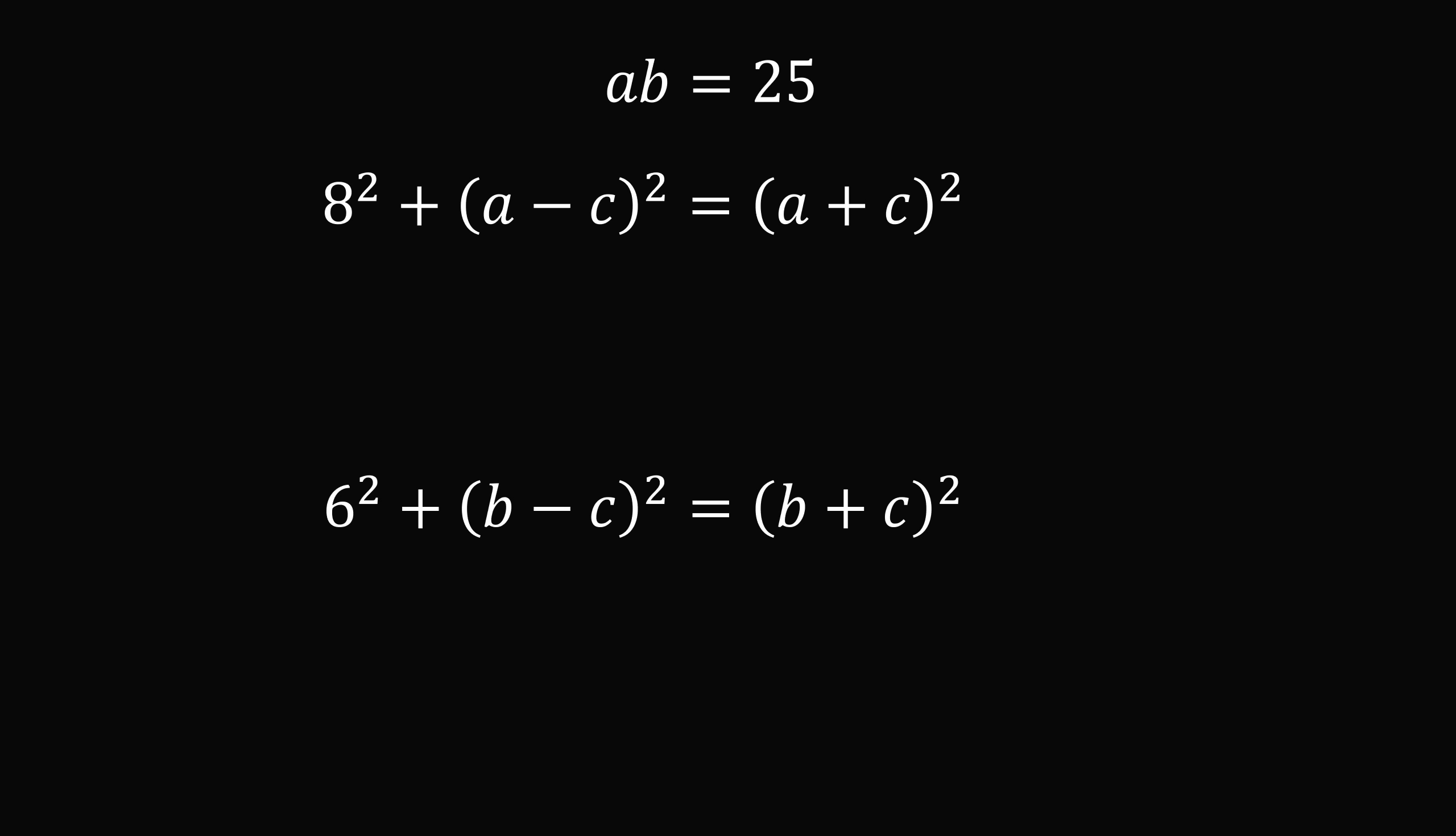In this next equation, we'll expand the binomials, cancel out the a squared and c squared terms, and then group the 2ac terms, so we get 4ac is equal to 8 squared, which is equal to 64. This means ac is equal to 16.